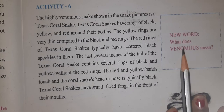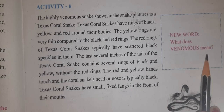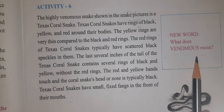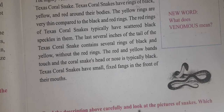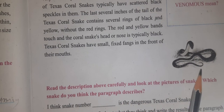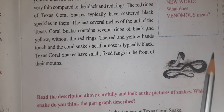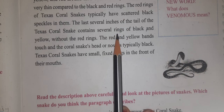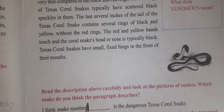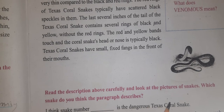Now we have learned a new word. What does venomous mean? Venomous means poisonous — the same as 'zehriela.' Now, read the description above carefully and look at the pictures of the snakes. We have described the Texas coral snake. Which snake do you think the paragraph describes?